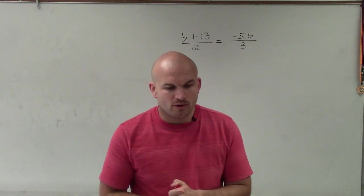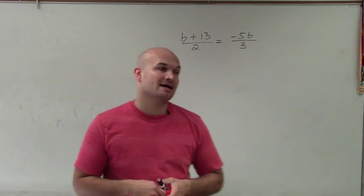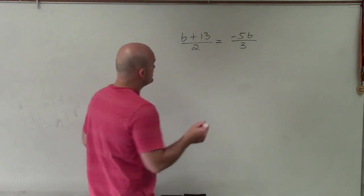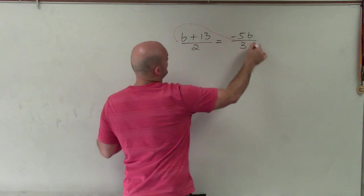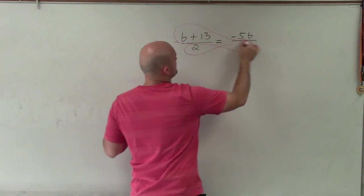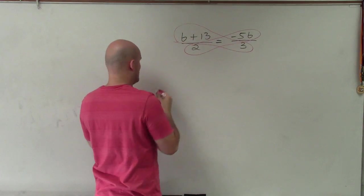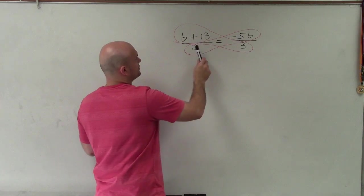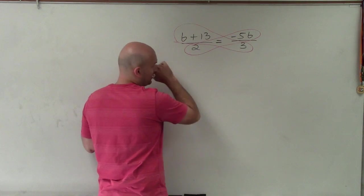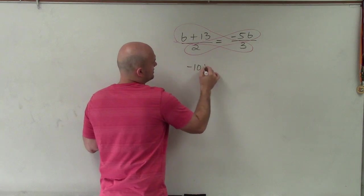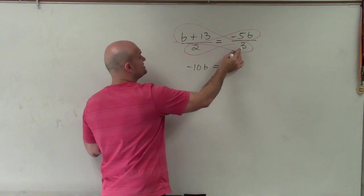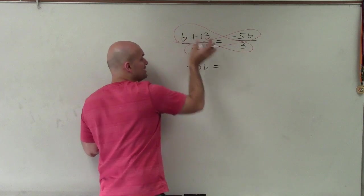To solve this proportion, I'm going to multiply by the cross product. So by multiplying my cross products, I just multiply 2 times negative 5b, which is going to be negative 10b, equals 3 times the expression b plus 13.